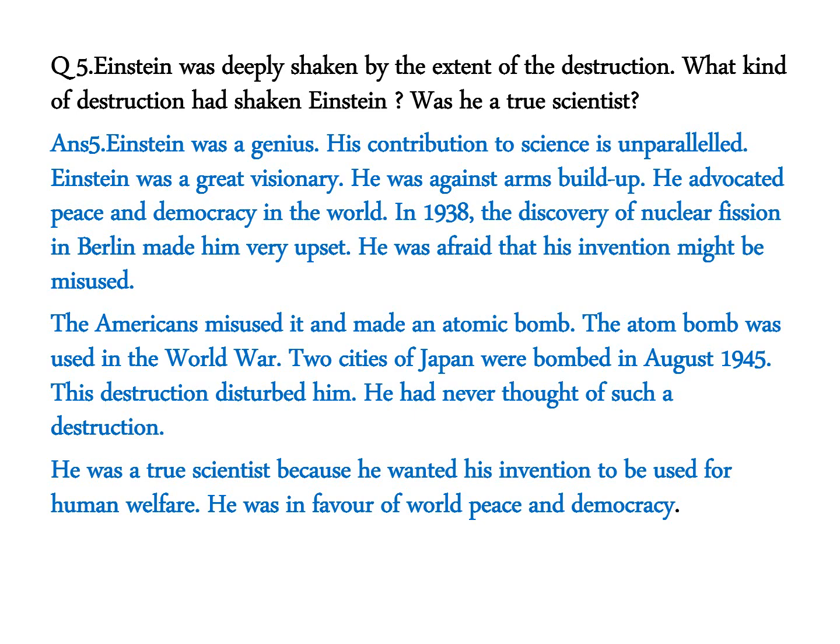Question 5: Einstein was deeply shaken by the extent of destruction of Hiroshima and Nagasaki. What kind of destruction had shaken Einstein? Was he a true scientist? Einstein was a genius whose contribution to science is unparalleled. He was against arms build-up and advocated peace and democracy. In 1938, the discovery of nuclear fission in Berlin made him very upset, afraid that his invention might be misused. The Americans used it to make an atomic bomb, which was used in World War II — two cities of Japan were bombed in August 1945. This destruction disturbed him greatly; he had never thought of such devastation. He was a true scientist because he wanted his invention to be used for human welfare and was in favor of world peace and democracy.